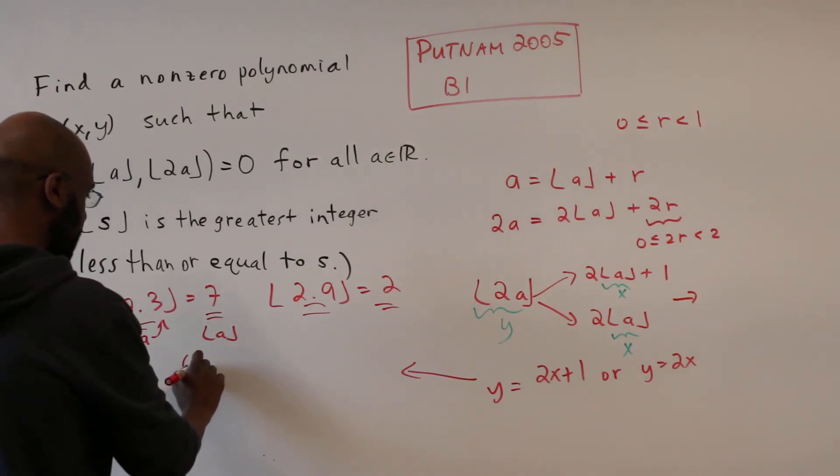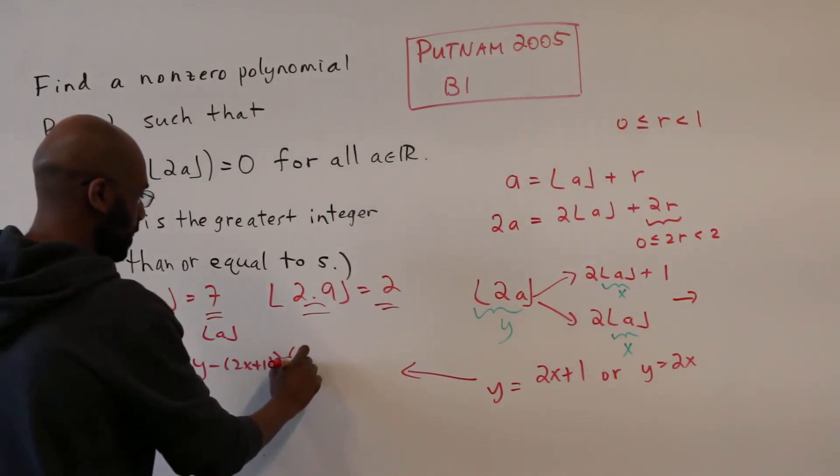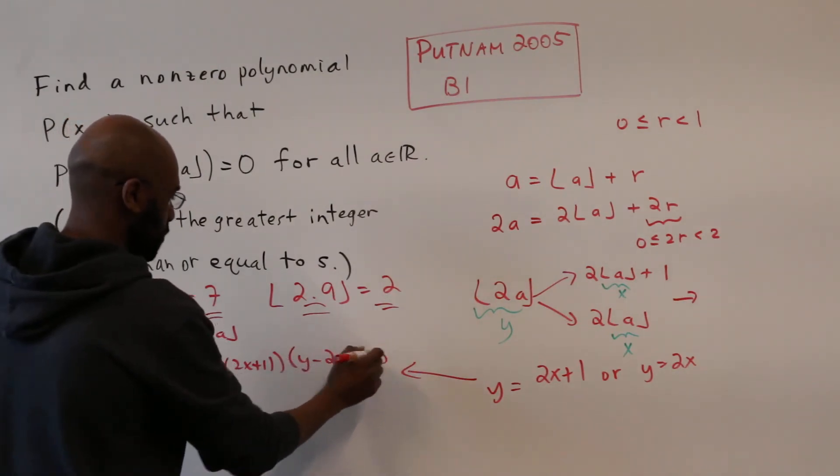And so we have that y minus the quantity 2x plus 1 times y minus the quantity 2x has to be 0.